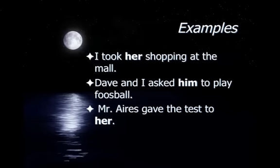Let's look at a couple of basic examples. 'I took her shopping at the mall' — her is functioning as a direct object. 'David and I asked him to play foosball' — him is also functioning as a direct object. 'Mr. Ayers gave the test to her' — her is functioning as an object of the preposition.